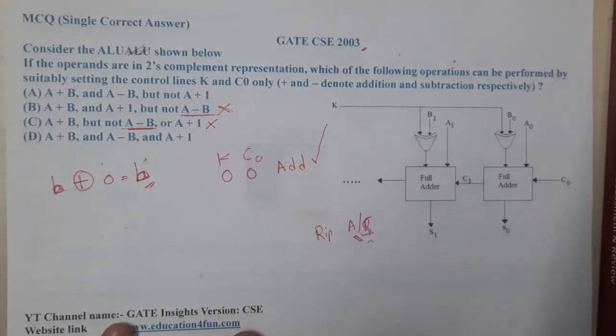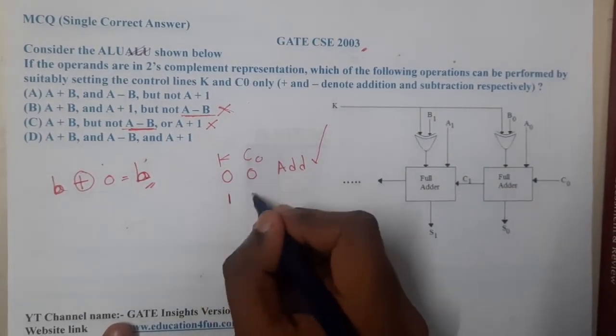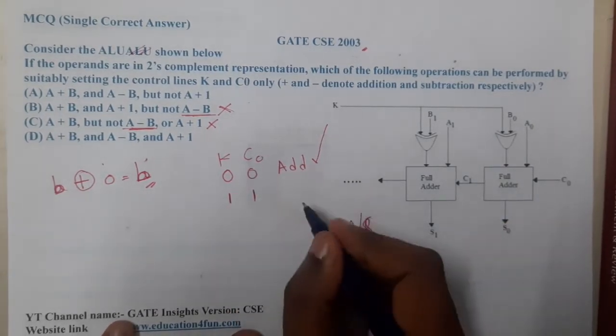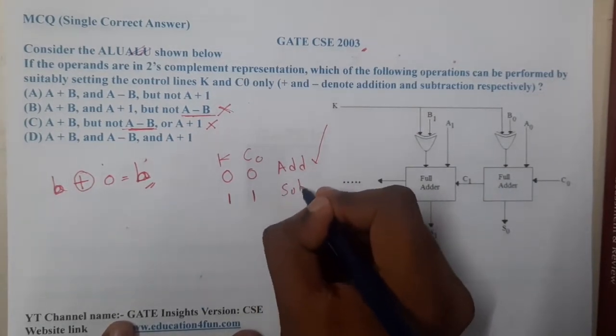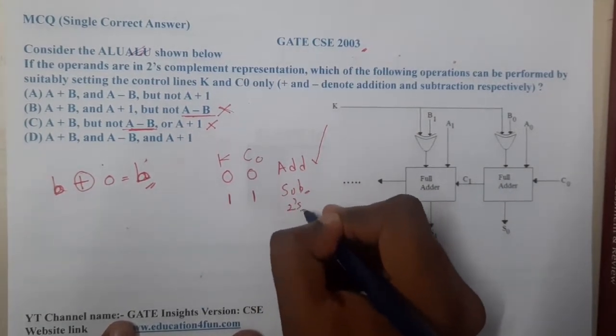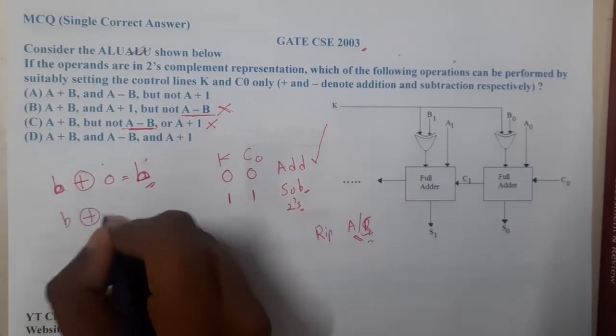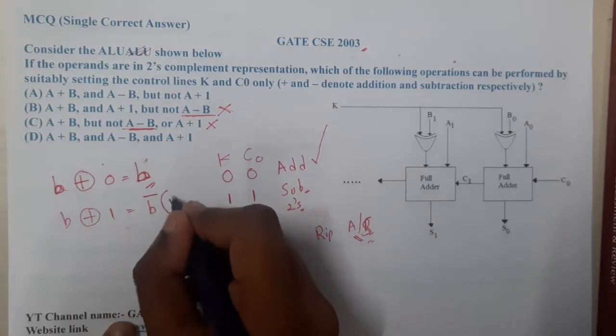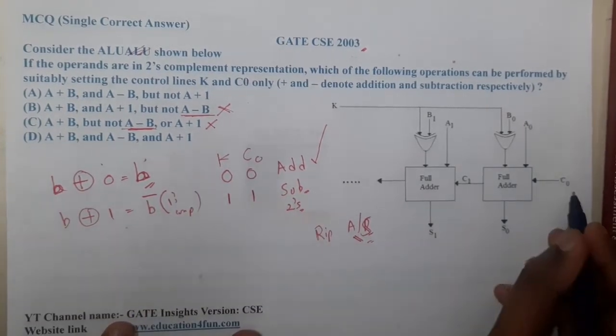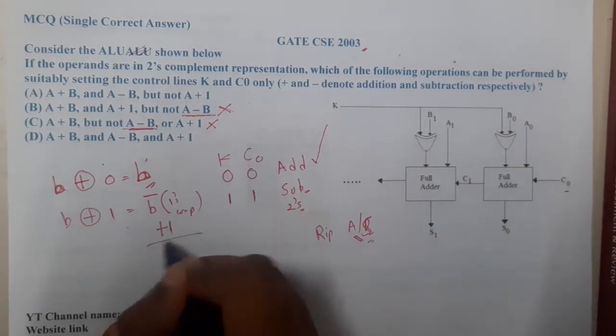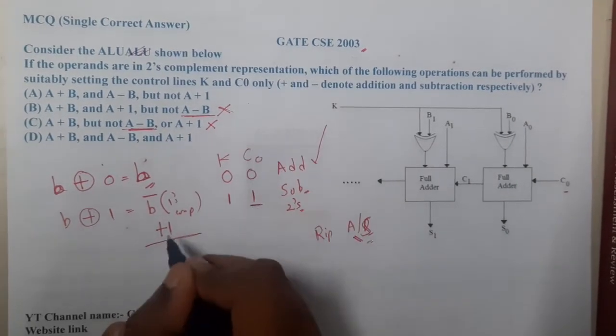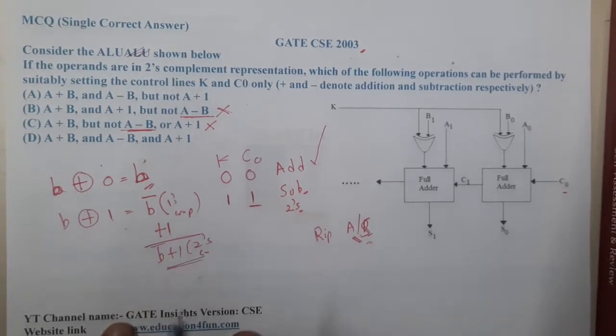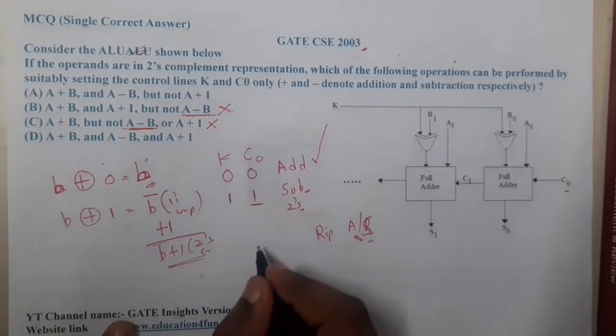When it comes to k equal to one and c₀ equal to one, when both are one, it works as a subtractor, and it works as a two's complement subtractor. How? b XOR one means it will make it complement. So up until this, complement is nothing but one's complement. Here, c₀ is going to add one for it, so that is the reason why we gave one here. Once this result is there—that is a, b bar plus one—what is this? It is nothing but two's complement. So it can perform a two's complement subtraction.